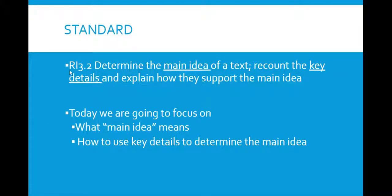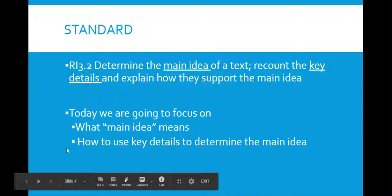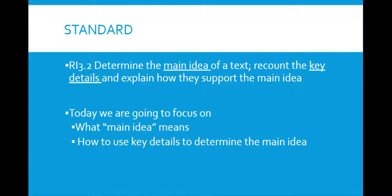So our standard today is RL 3.2. And it says, determine the main idea of a text, recount the key details, and explain how they support the main idea. So we're going to be focusing on the main idea and how we can use key details to help us do that. So in order to do this, we're going to have to know what main idea means. And we're going to have to be able to use key details to determine the main idea. So let's get started.